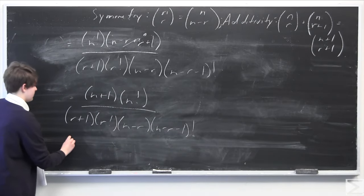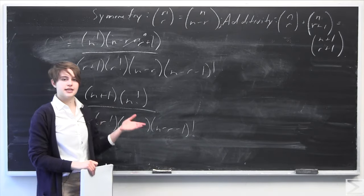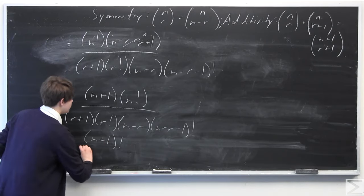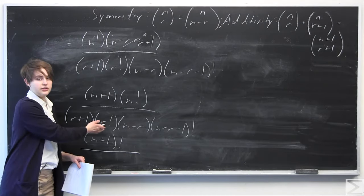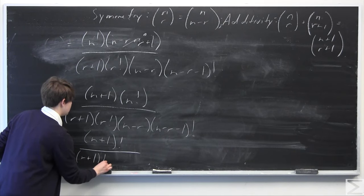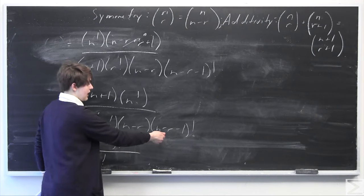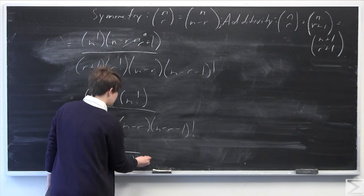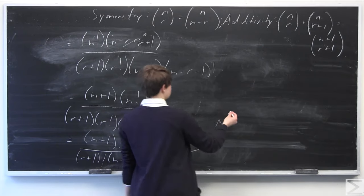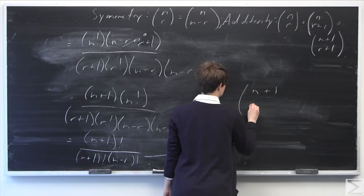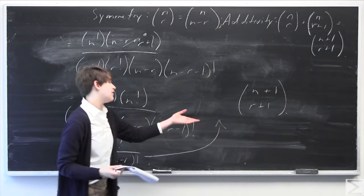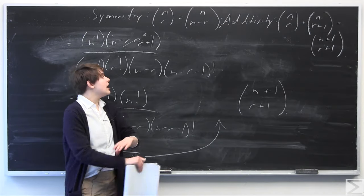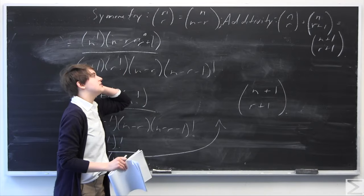By the definition of factorial, (n+1) times n factorial equals (n+1) factorial. In the denominator, (r+1) times r factorial equals (r+1) factorial, and (n minus r) times (n minus r minus 1) factorial equals (n minus r) factorial. This gives us (n+1) factorial over (r+1) factorial times (n minus r) factorial, which is identically equal to (n+1)-choose-(r+1). By finding a common denominator and using properties of factorials and factor by grouping, I've proved the additivity property for binomial coefficients.